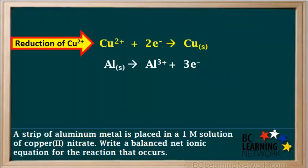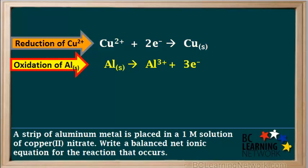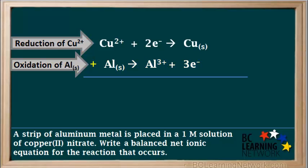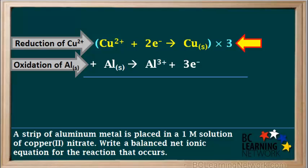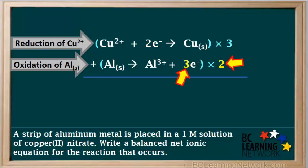So we have the two half reactions: the reduction of Cu²⁺ and the oxidation of aluminum solid. In order to obtain the net ionic equation for the overall redox reaction, we will add these two half reactions together. We have two electrons on the left side of the top half reaction and three electrons on the right side of the bottom half reaction. In order to equalize the electrons, we multiply the top half reaction by three and the bottom half reaction by two. This will give us three times two, or six electrons on the left side, and two times three, or six electrons on the right side. Since we have six electrons on both sides, the electrons will cancel.